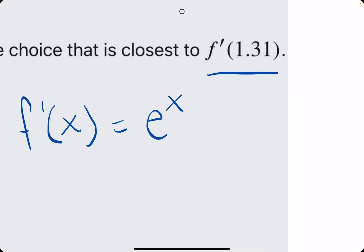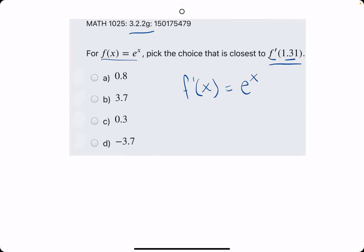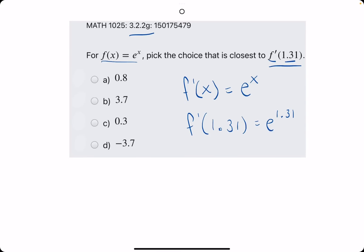So now, we have f prime, so we will just plug in 1.31, where we see x. So e to the 1.31.